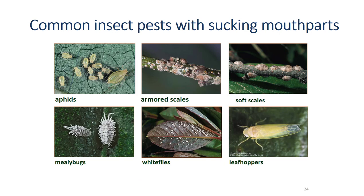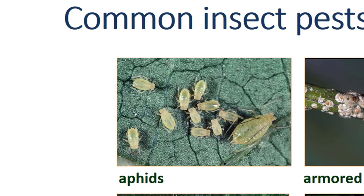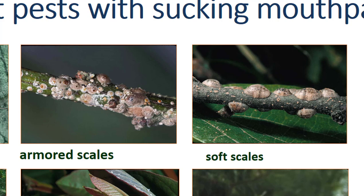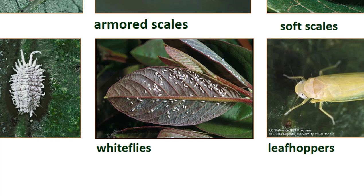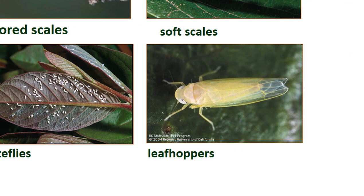Aphids are small, pear-shaped insects that feed on many plants and produce a lot of honeydew. Scale insects spend most of their lives hidden under a disc-like covering or scale — they have no visible antennae or legs and cannot move most of the time. Armored scales are smaller and flattened; soft scales are more bulbous and produce honeydew. Scales are mostly pests of trees and shrubs. Mealybugs are waxy, segmented insects that feed on a variety of plants and produce honeydew. Whiteflies are tiny insects — adults have powdery white wings, and nymphs are oval and don't move very much. Whiteflies usually occur in groups. Leafhoppers may cause yellow stippling on some plants but usually do not cause serious damage.